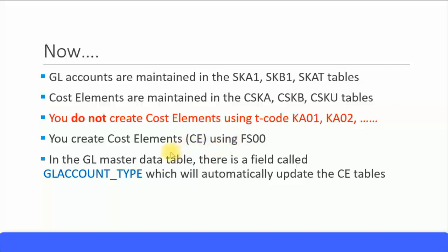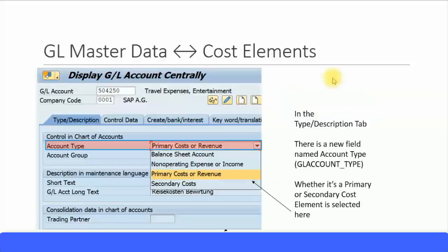In the GL master data table there is a field called GL_ACCOUNT_TYPE which will automatically update the cost element tables. In the GL master data create transaction, at the time of creating your GL account, if it's going to be an expense or a revenue item you need to select what option it is in the account type field.